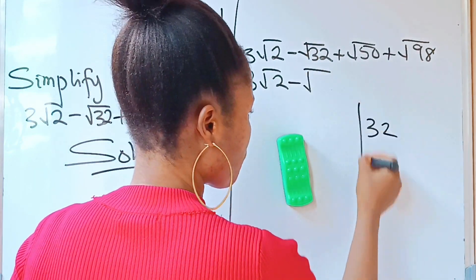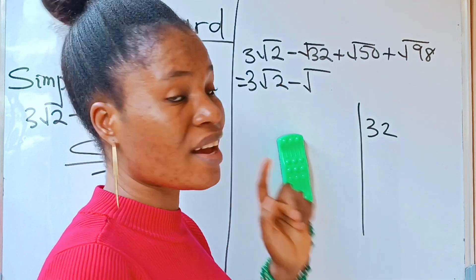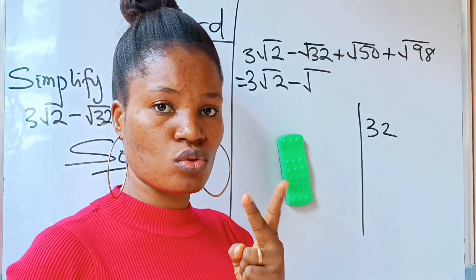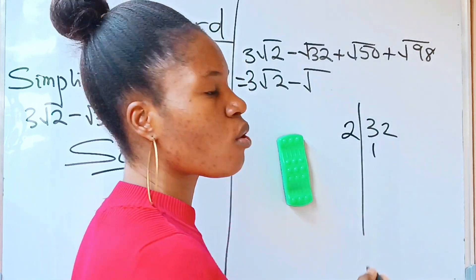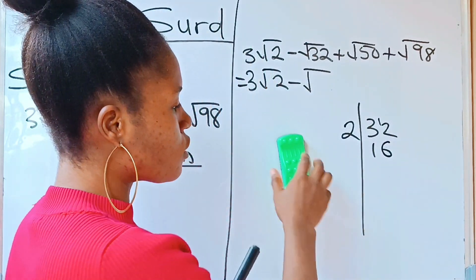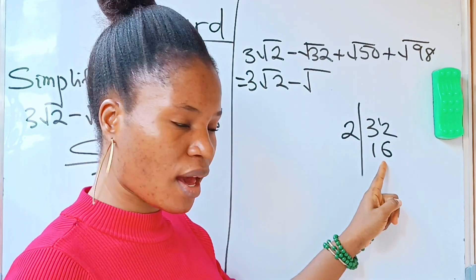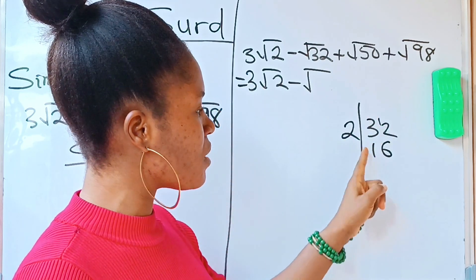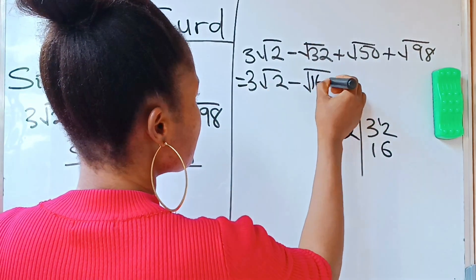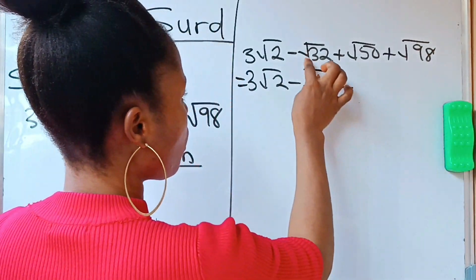Write 32 and divide by the smallest number possible, which is 2. Dividing gives us 16. I stop here because 16 is a perfect square — 2 times 16 gives 32. So I rewrite root 32 as root 16 times 2, which splits to root 16 times root 2, giving us 4√2. That is the simplified form of root 32.